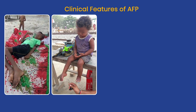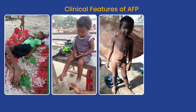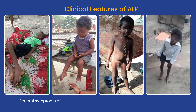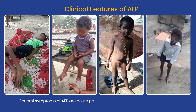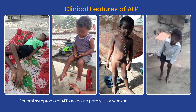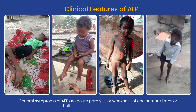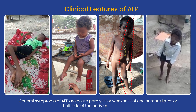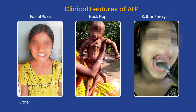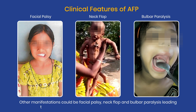Now let us look at the signs and symptoms of AFP. General symptoms of AFP are acute paralysis or weakness of one or more limbs, or half side of the body, or all four limbs. Other manifestations could be facial palsy, neck flop and bulbar paralysis, leading to paralysis of pharyngeal muscles and respiratory muscles.